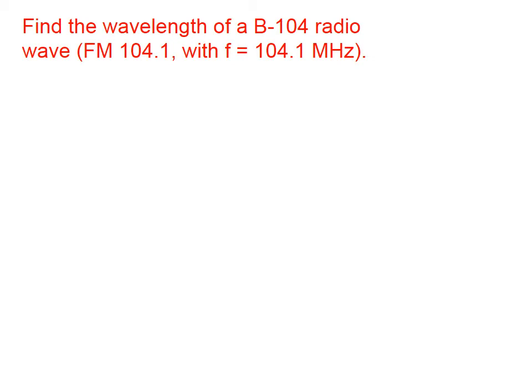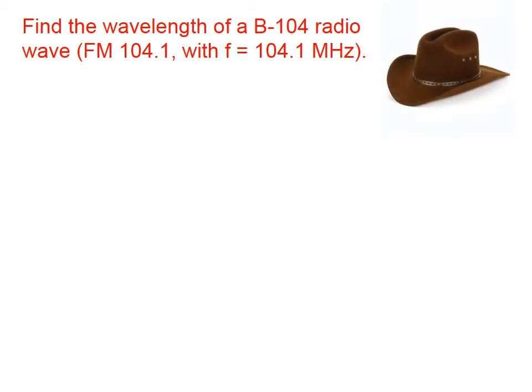Find the wavelength of a radio wave for FM 104.1, which has a frequency of 104.1 megahertz. We're going to use this light speed equation, which is good for all types of light: visible waves, X-rays, ultraviolet, and radio waves. These are the radio waves carrying information from the radio station through the atmosphere and to your car radio — not the sound waves coming out of your car radio and interacting with your ears.